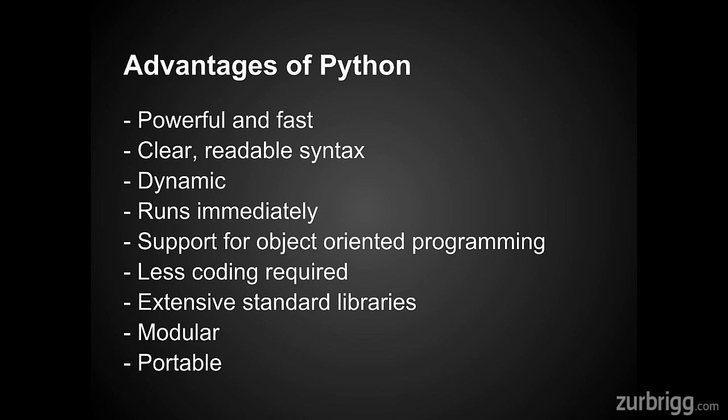Python is a dynamic language. This means that everything happens at runtime, unlike C which is compiled and many of the properties are set during compile time. Python is also dynamically typed, which means a variable doesn't always have to stay one type — it may start out as an integer and then later become a string. In statically typed languages such as C, this is not possible.